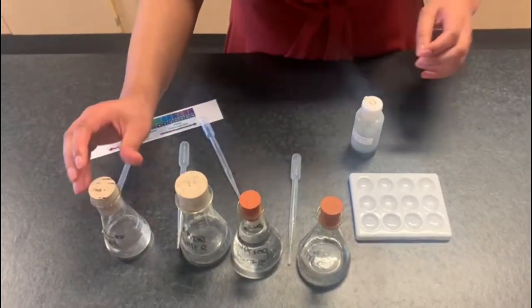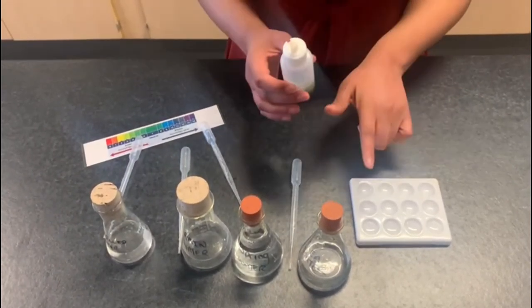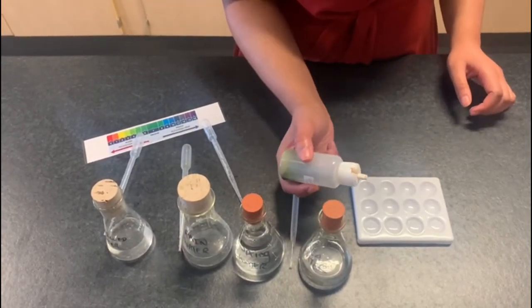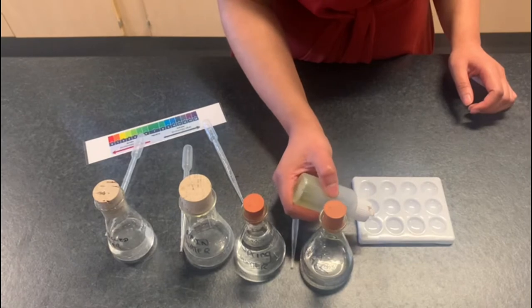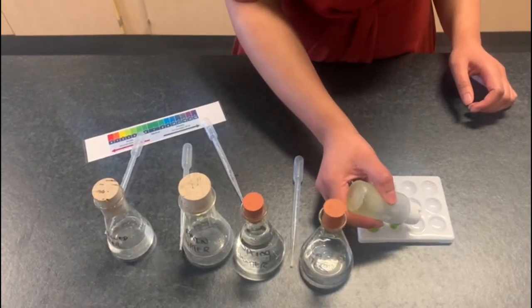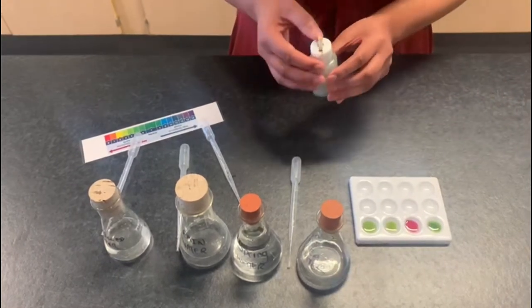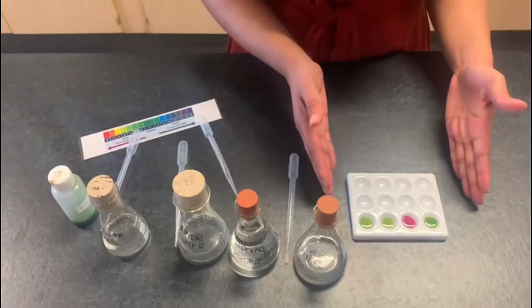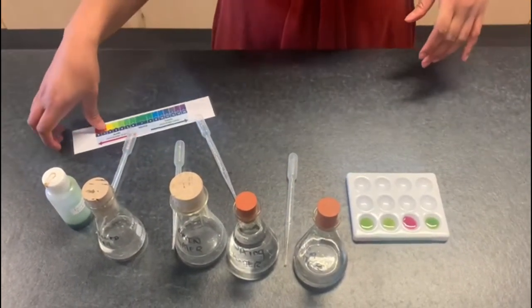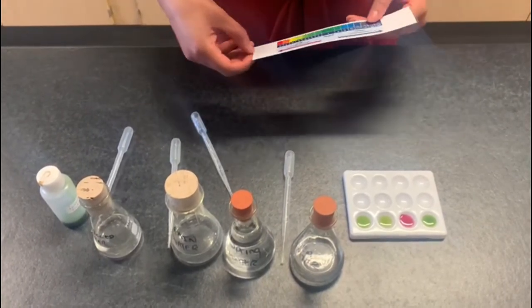We are now going to test the pH of each of these samples using universal indicator. So to the samples that we've put into the spotting tile I will drop a drop of the universal indicator. We can see a color change straight away. For the results all you need to do is check them against the pH scale.